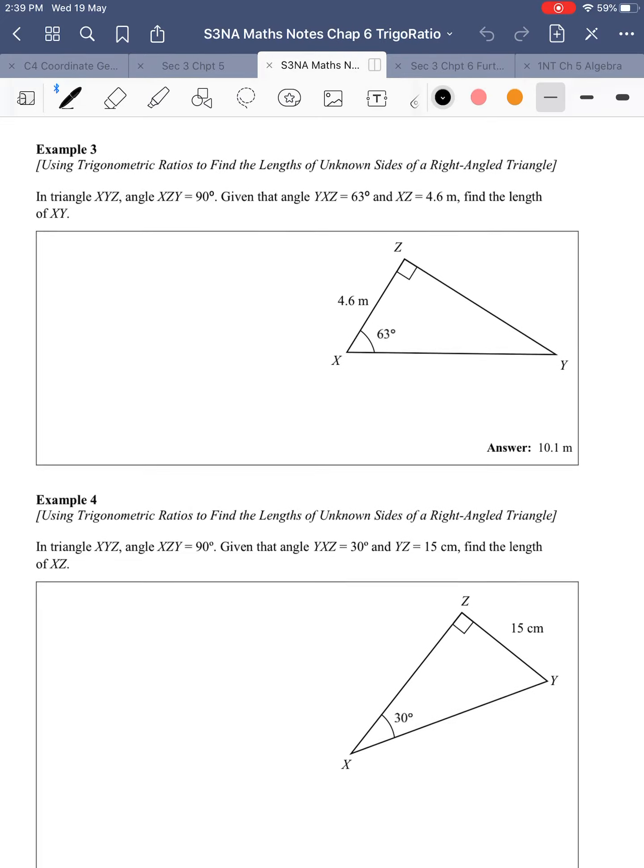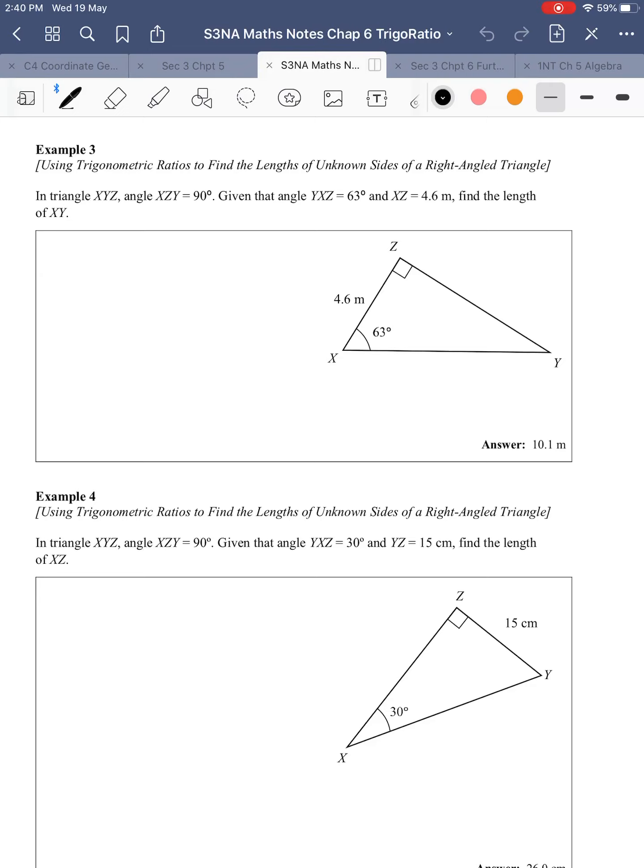Example 3 asks us to use trigonometric ratios to find the length of unknown sides of a right-angled triangle. We have angle YXZ and length XZ. Remember what I told you: first thing you do is always label your O, A, and H. I label hypotenuse opposite my right angle, then this is my known reference angle, so that would be my opposite, and adjacent would be the leftover length. Find the length of XY.